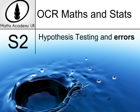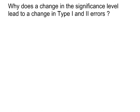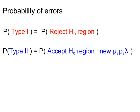Hypothesis testing and errors. Why does a change in the significance level lead to a change in type 1 and type 2 errors? We know that type 1 errors are based on the size of the rejection region, and type 2 errors are based on the size of the acceptance region.